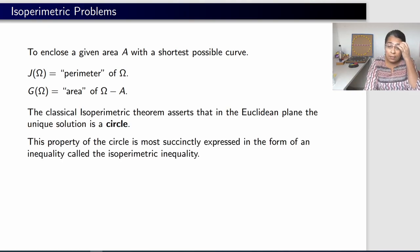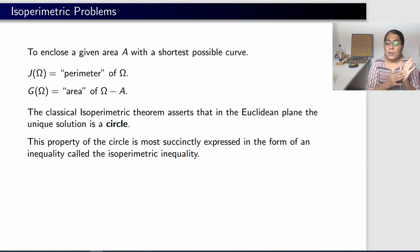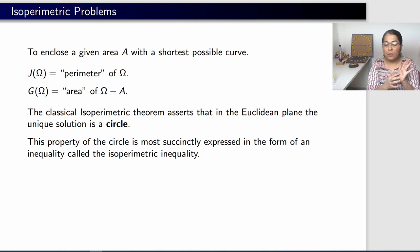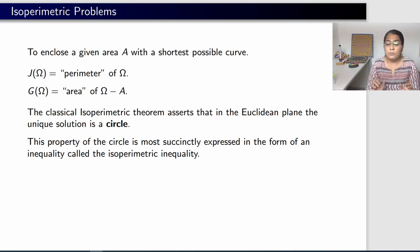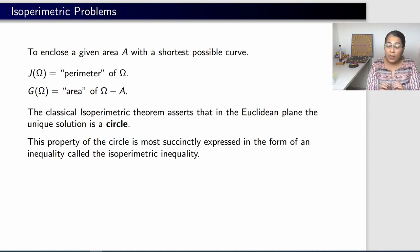The classical isoperimetric theorem states that in the Euclidean plane, the curve that minimizes the perimeter while enclosing a fixed area A is a circle — and it is the unique solution. No other shape will minimize the perimeter; if a curve is not a circle, then the perimeter will be larger and it will not be a perimeter minimizer.